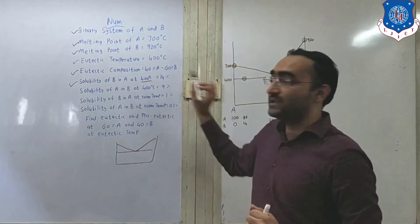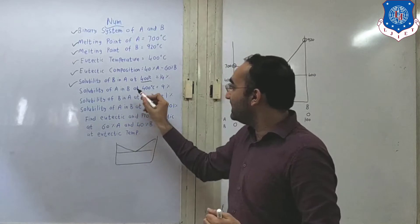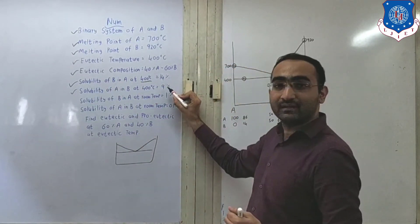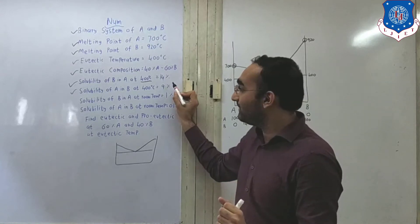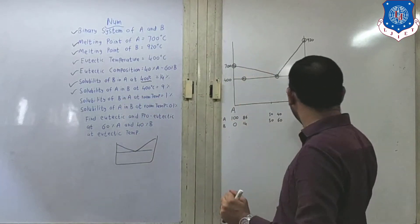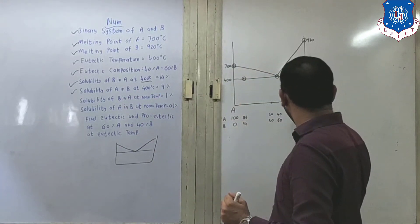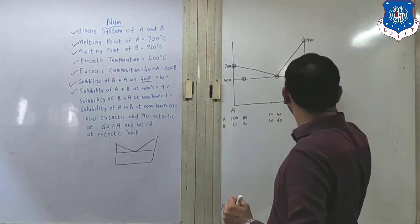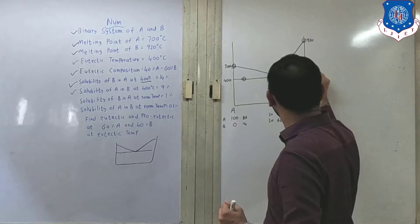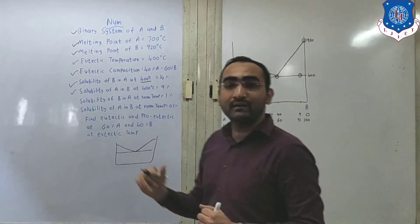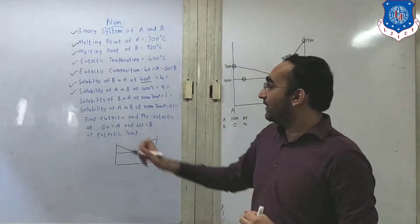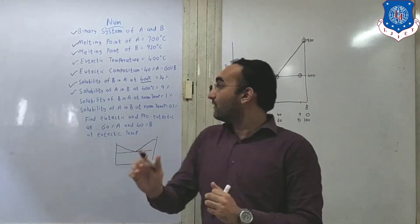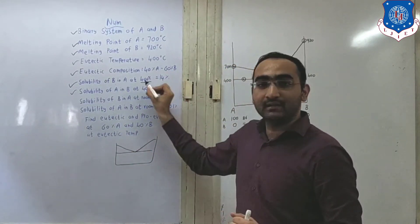That is the solubility of B in A. The same way, A in B at 400 degrees Celsius — that is 9% A. What is 9% A? That is a minor amount. Which metal is there? A. So A is 9, so over here somewhere there is 9 and 91. Make that point on the 400 degrees Celsius line. Plot that point over there. Now we have also introduced the solubility of A in B, where at 400 degrees Celsius.